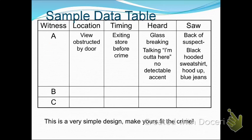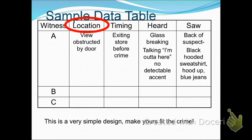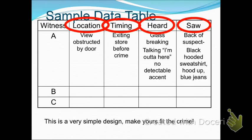This is a sample data table where you have three different witnesses on the left-hand side. There are four main general categories of information that are collected: the location of the witness, where they were when the crime occurred; the timing, when were they there; what they heard; and what they saw. This is what we're going to be using for our activities coming up.